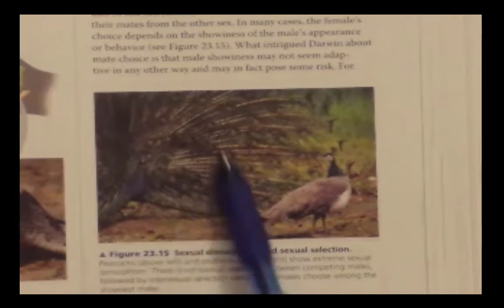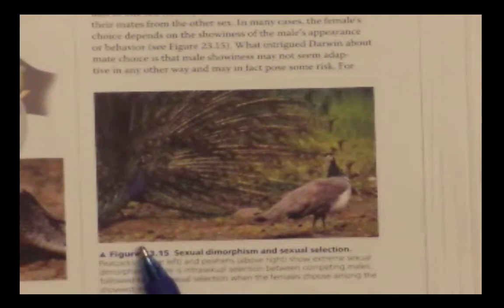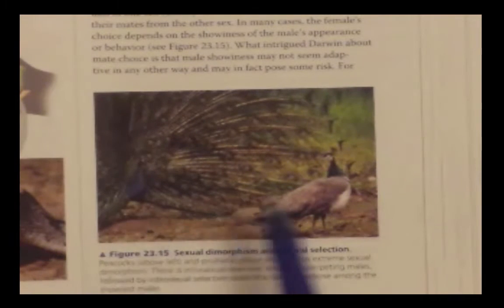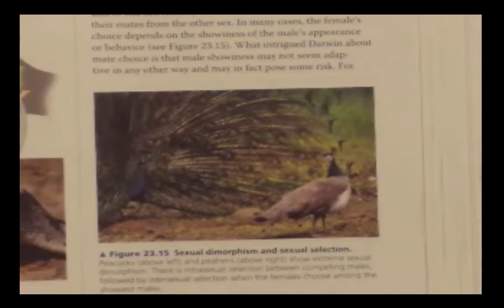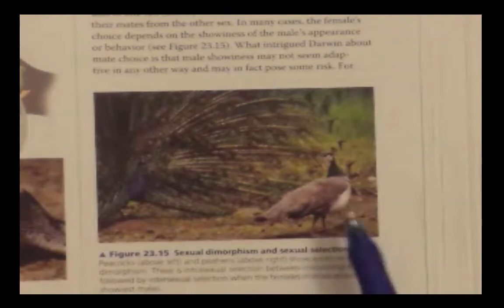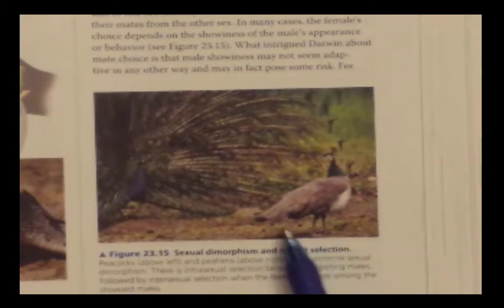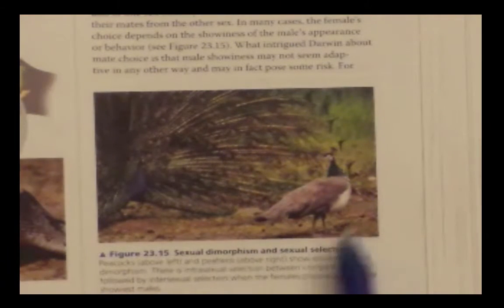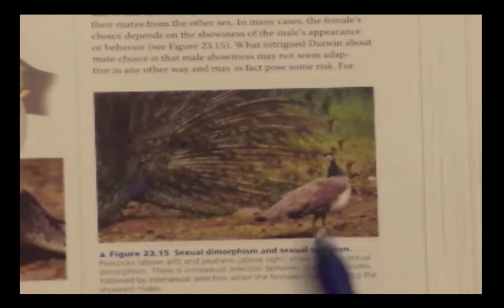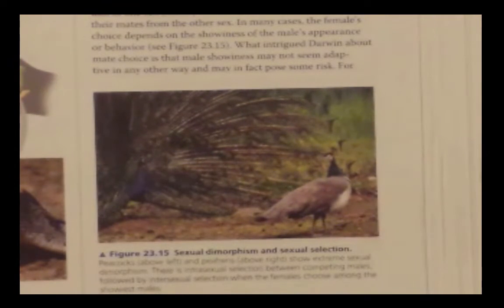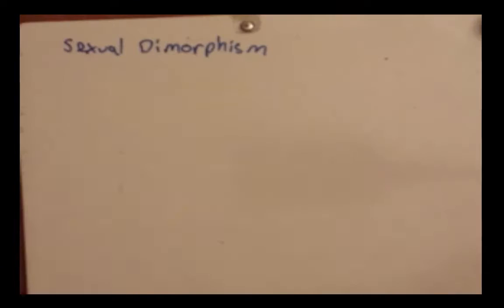This elaborate color makes the male peacock more attractive to the female. The female is a much more basic color that allows it to blend in with the environment, which is really important because she's going to be the one caring for the young. So that's sexual dimorphism. The next one is intrasexual.